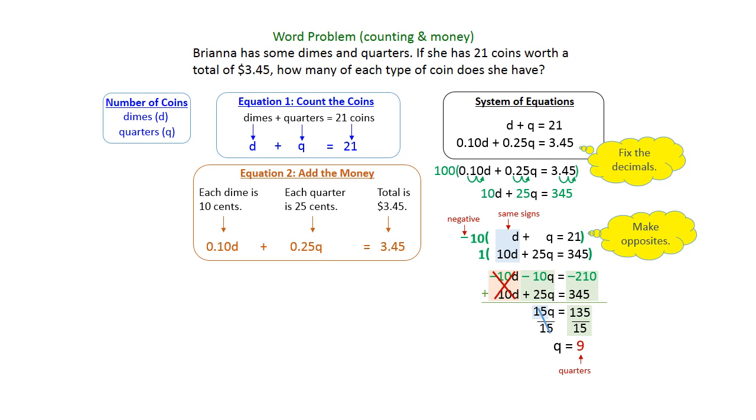Then you can just take the 9 and plug it anywhere you want. I'm going to take the original D plus Q and put the 9 in for Q, and then you're just subtracting the 9 from both sides. And finding that D is equal to 12, and that's the number of dimes that we have.